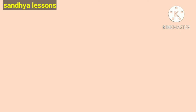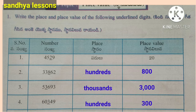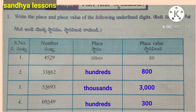Worksheet 6. First: Write the place and place value of the following underlined digits. 4,529: underlined digit is 2; 2 is in the tens place, place value is 20. 33,862: underlined digit is 8; 8 is in the hundreds place, place value is 800. 53,693: underlined digit is 3; 3 is in the thousands place, place value is 3,000. 60,349: underlined digit is 3; 3 is in the hundreds place, place value is 300.